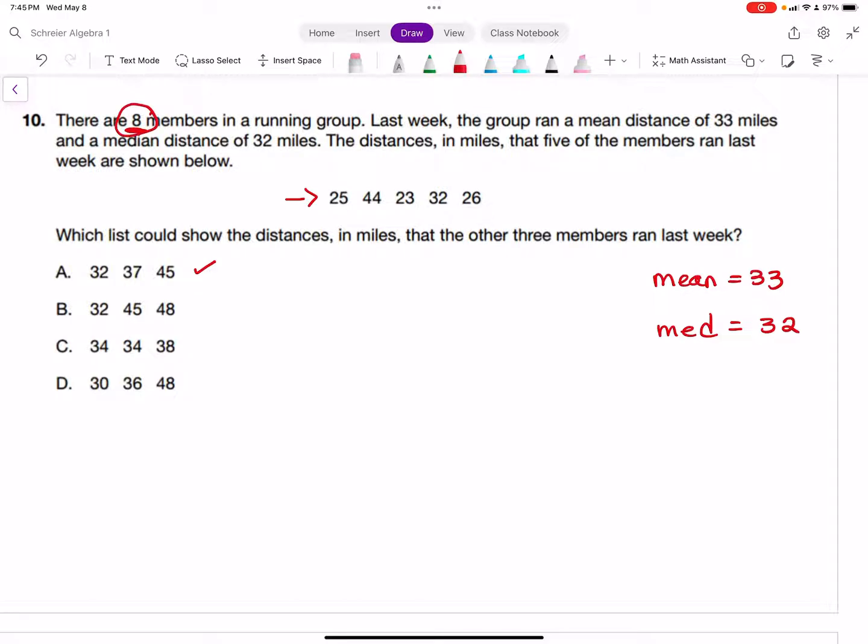So we take 25 + 44 + 23 + 32 + 26, then add in these three values: 32, 37, and 45, and divide the whole thing by 8. When I did that, I found that answer choice A and answer choice D would give us the mean of 33. So I know it's either A or D.